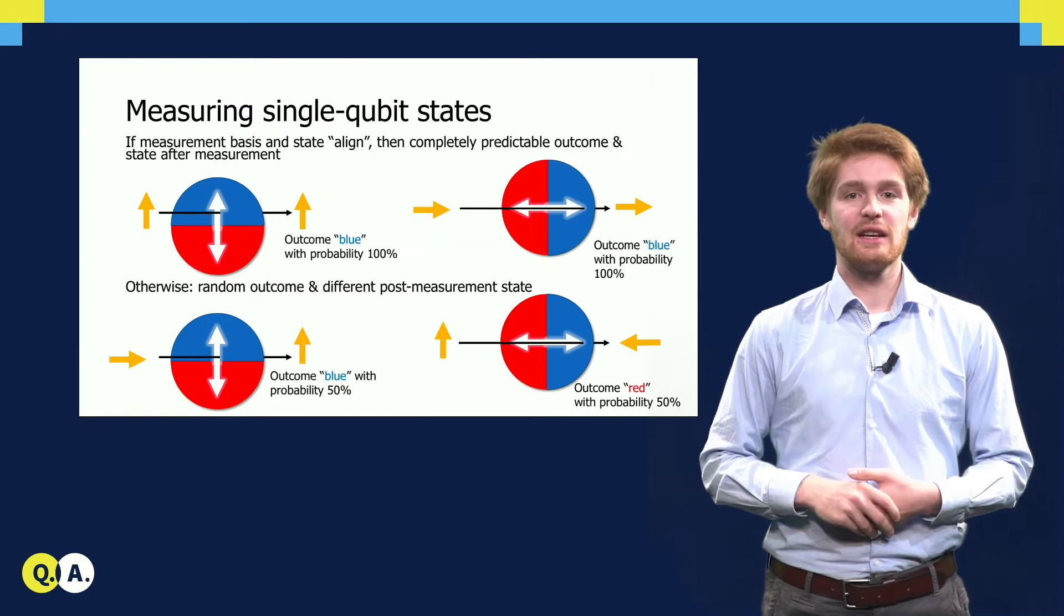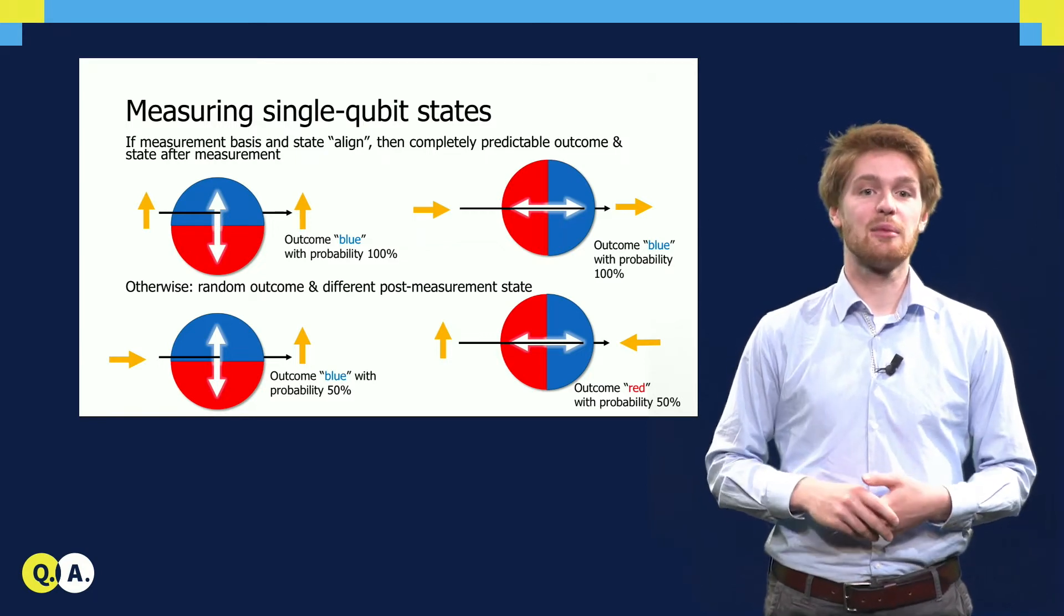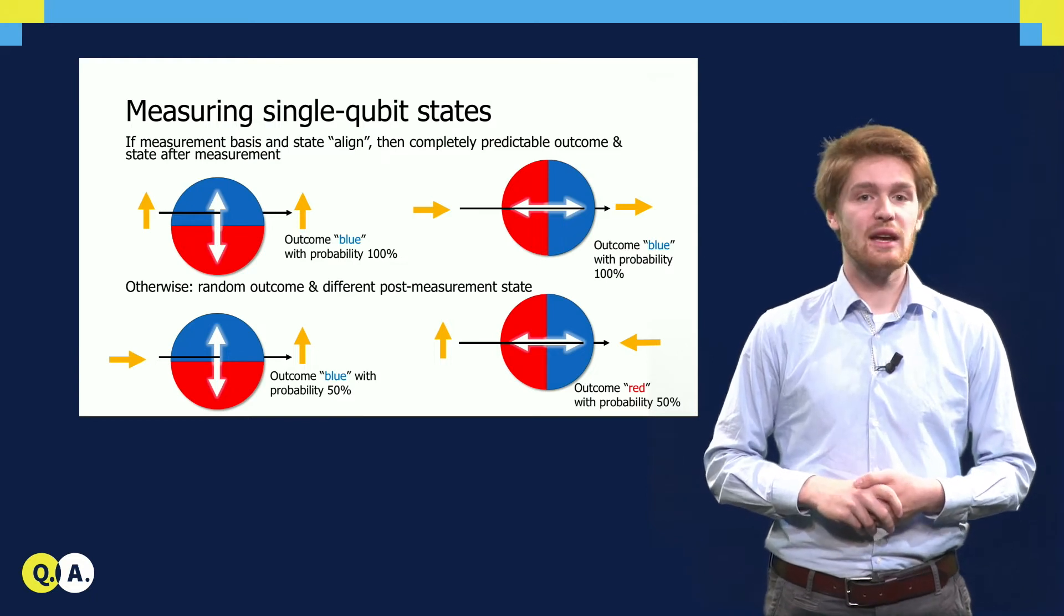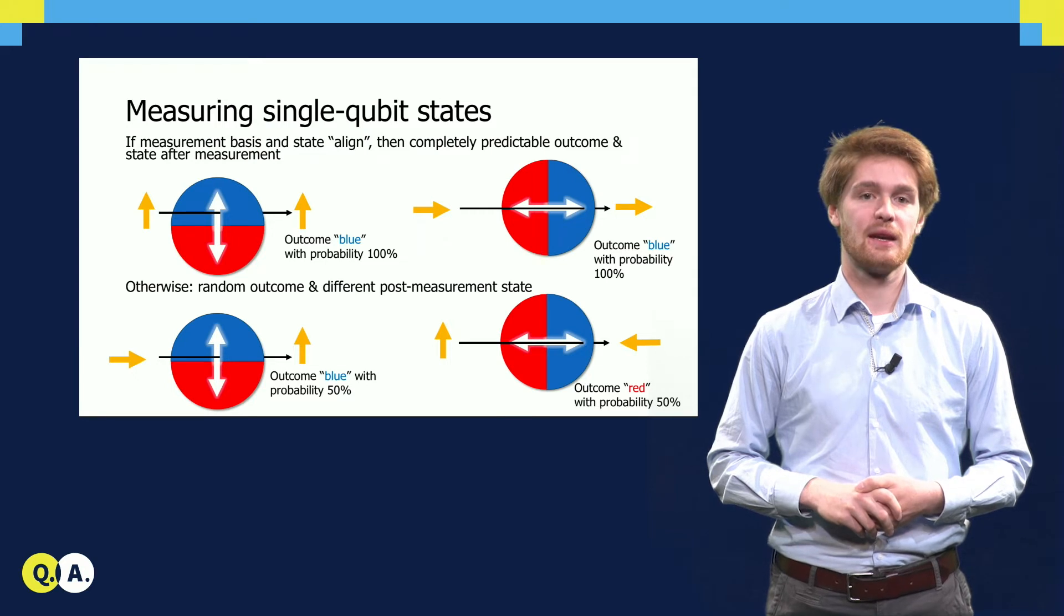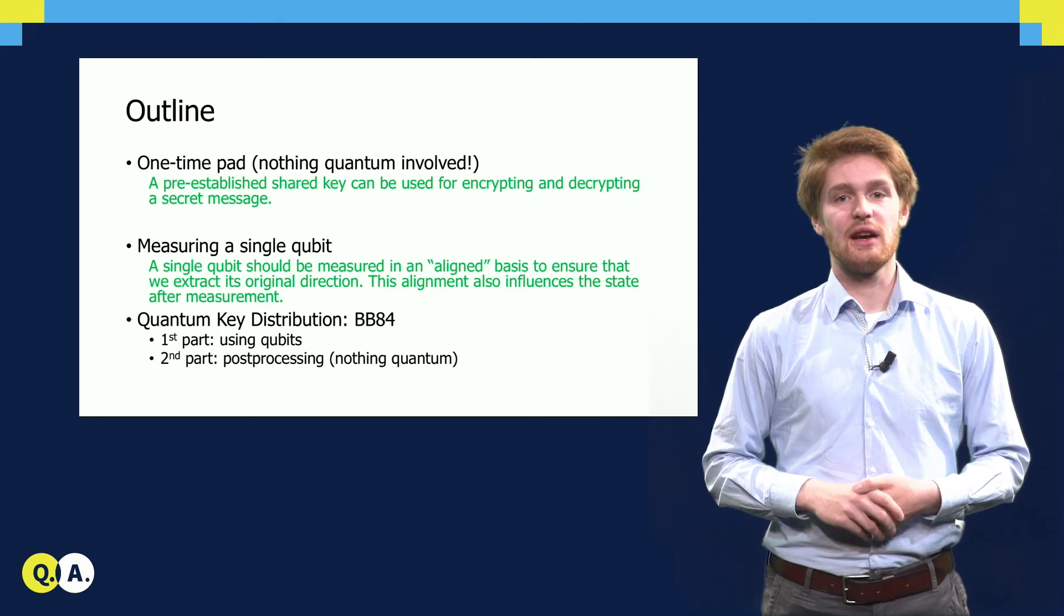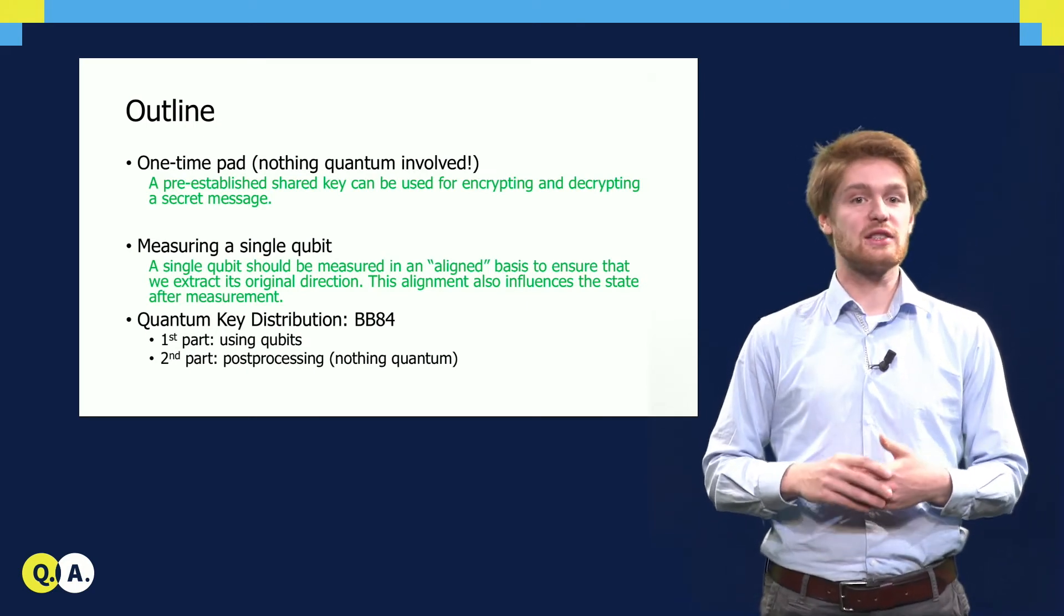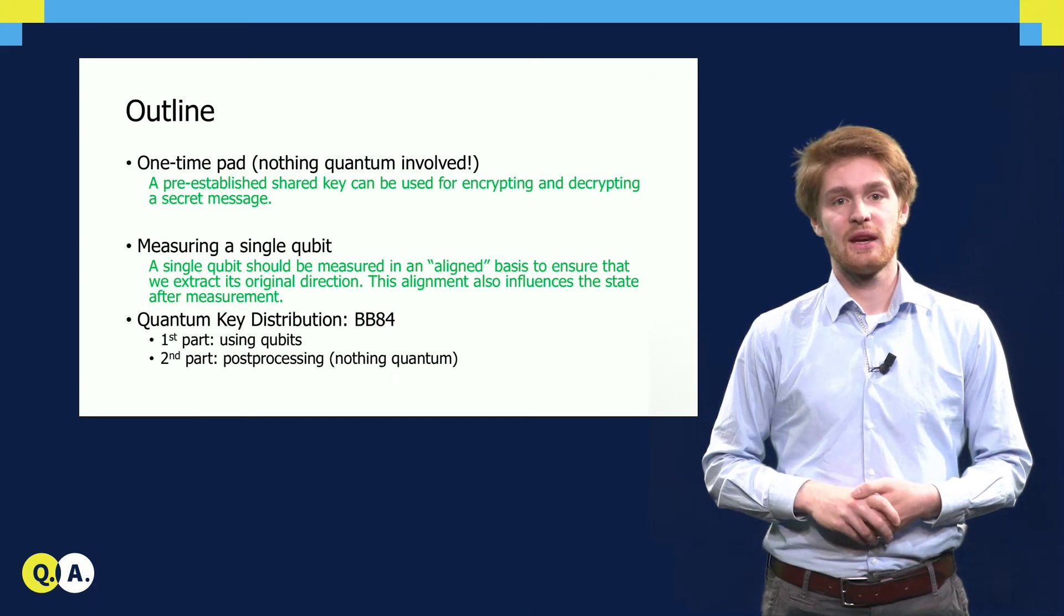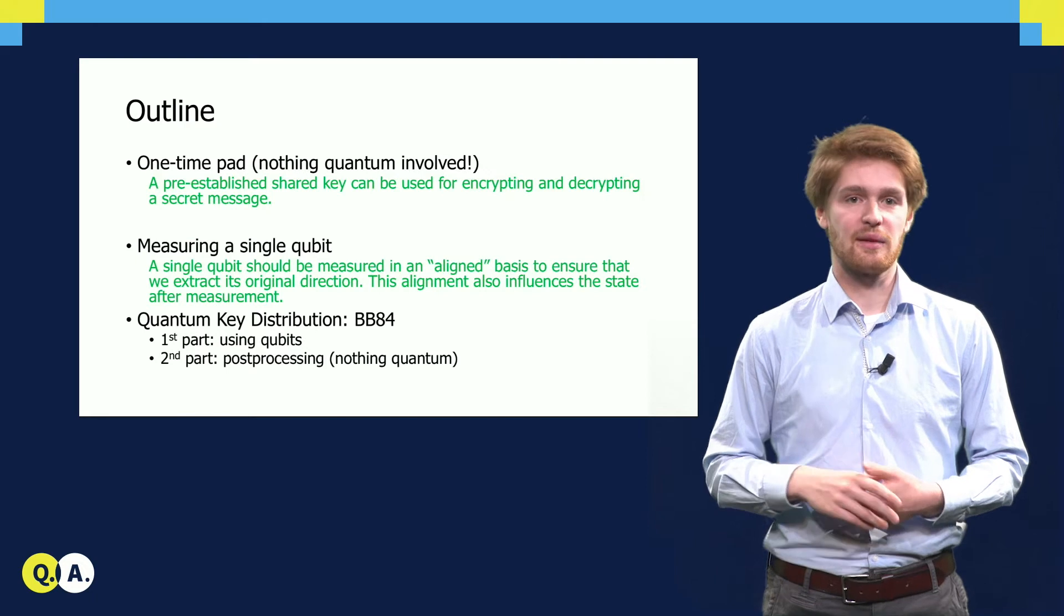Using similar reasoning, one can find out if the outcome and post-measurement state are completely predictable or random for all eight possible combinations of states and measurement bases. Measuring a single qubit state could be summarized in the following lines. A single qubit should be measured in an aligned basis to ensure that we extract its original direction. And this alignment also influences the state after the measurement.